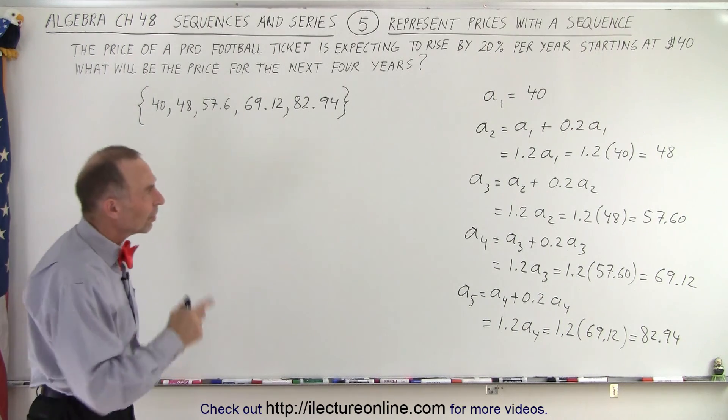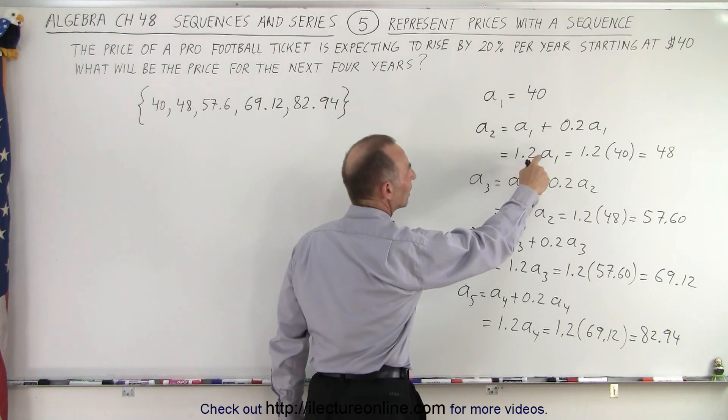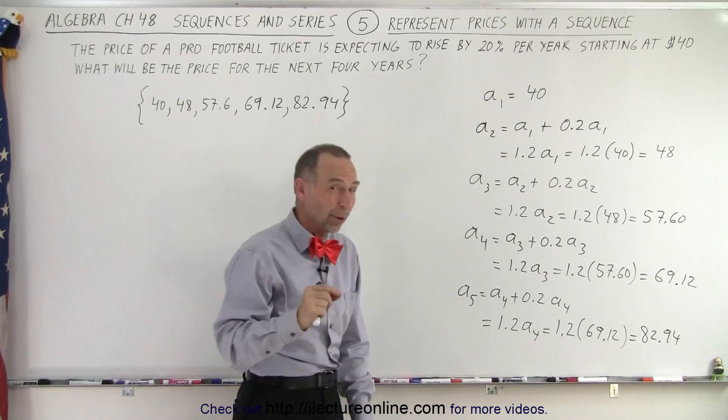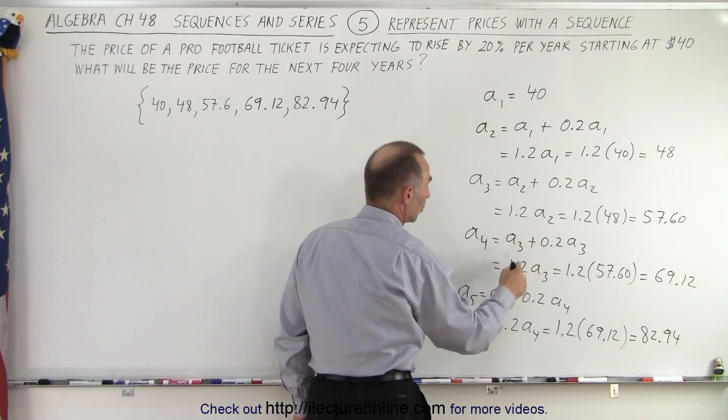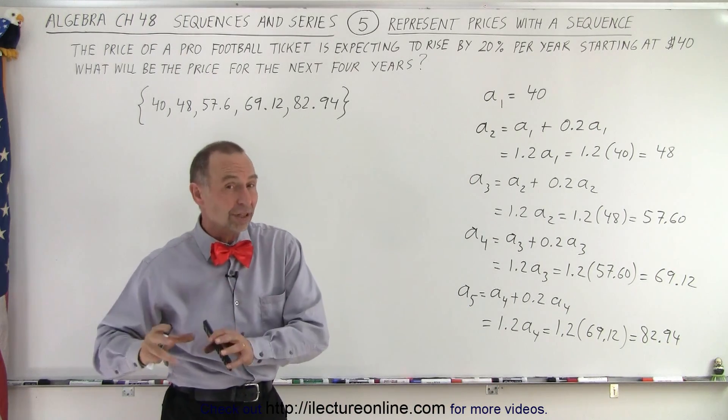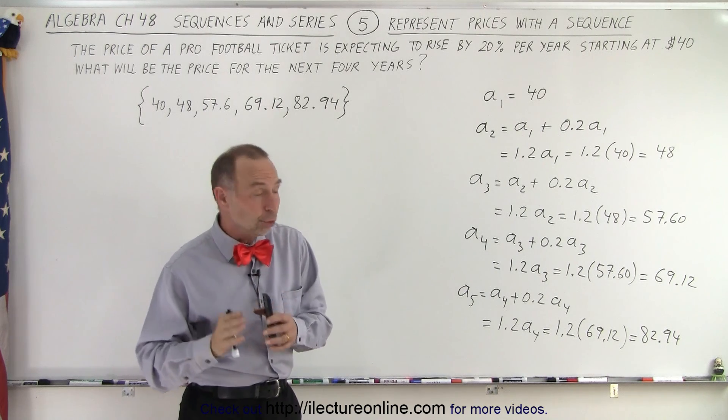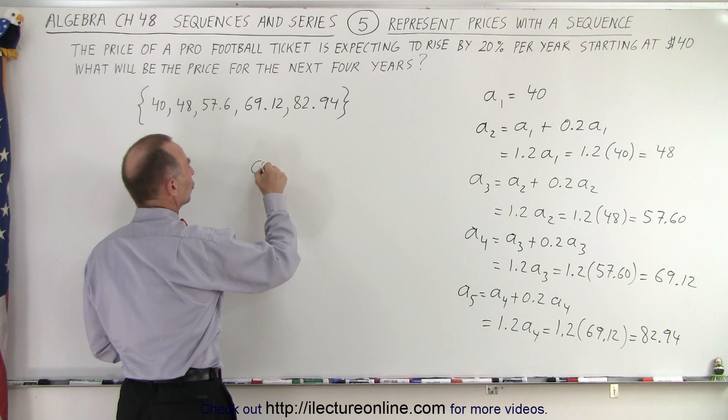Now what kind of sequence is this? Well, notice that we get every next term by taking the previous term and multiplying it by the same number, 1.2: 1.2 times a₁, 1.2 times a₂, 1.2 times a₃. So it is what we call a geometric sequence, and what does 1.2 represent? 1.2 is the common ratio.